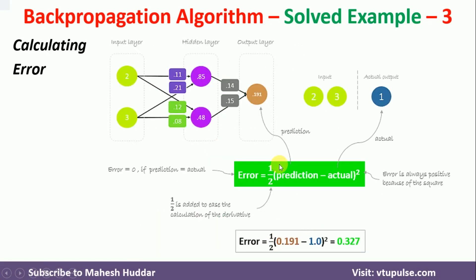Now our next task is to calculate the error. You can use different error functions. In this case, I am going to use the error function as half the squared difference between the predicted output minus the actual output. We know the actual output is 1 and the predicted output is 0.191. Once you put those values in, you get the error as 0.327.